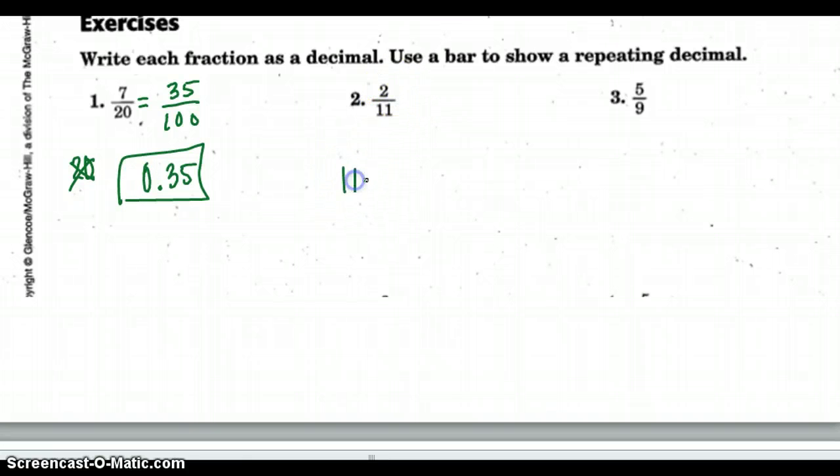2 over 11, I can't make into 100, so we'll divide 11 into 2. It has to be 20 because it won't go into 2. It goes 1 time, so it's 11, and 11 from 10 is 9, we borrowed. So 90, it'll be 8, 88, and that'll go once again.